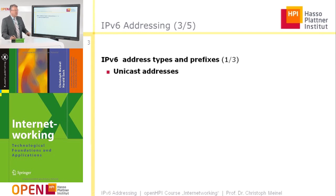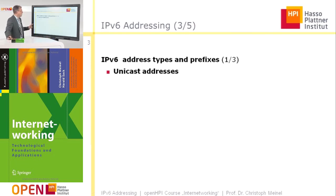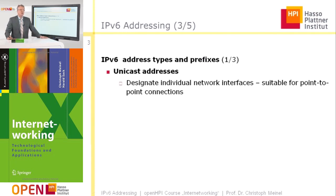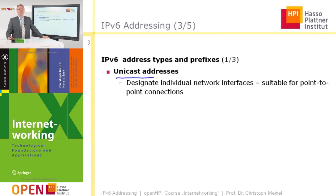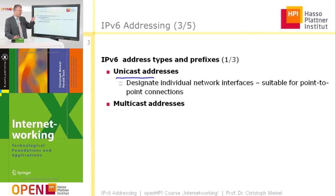There are different IPv6 address types, distinguished by their prefixes. First, we have unicast addresses, which designate individual network interfaces and are suitable for typical point-to-point connections as known from the traditional Internet.